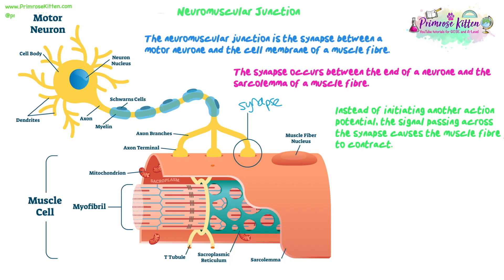This time, instead of initiating another action potential as it would if it were a synapse with another neuron, what actually happens is the signal passes across the synapse and causes the muscle fiber to contract. So the aim here is not to cause another action potential — we're aiming to cause a contraction.